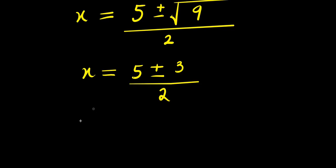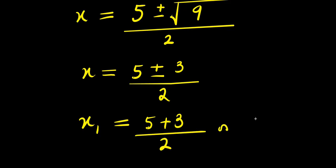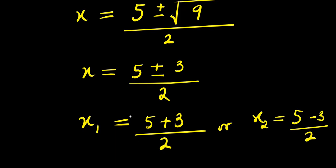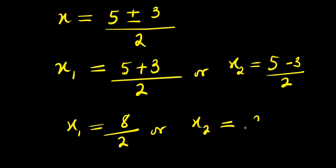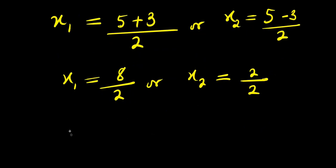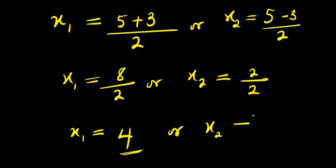So from here, x equals 5 plus 3 divided by 2, or x equals 5 minus 3 divided by 2. That gives x equals 8 divided by 2, which is 4, or x equals 2 divided by 2, which is 1. So we have two values for x: 4 and 1.